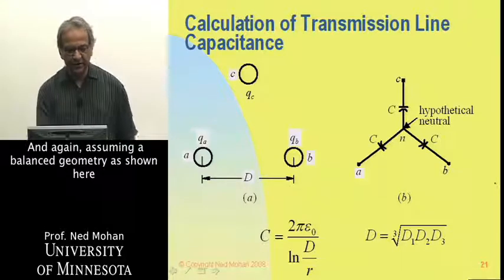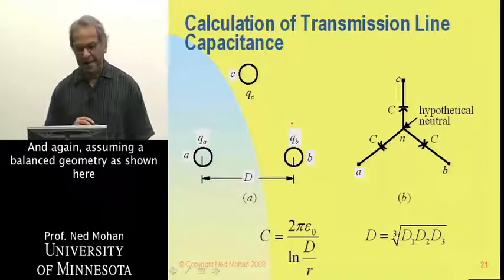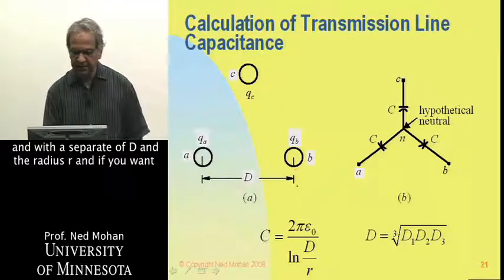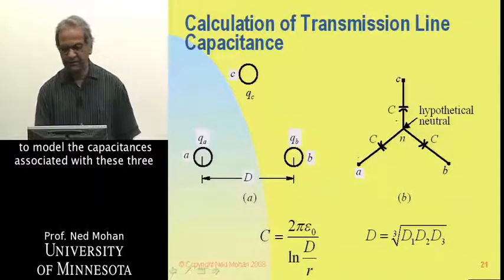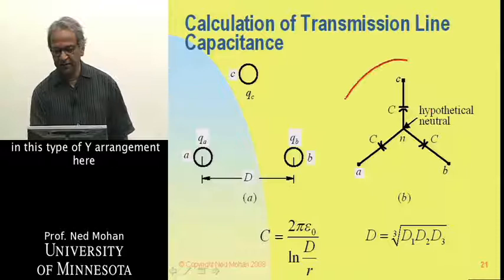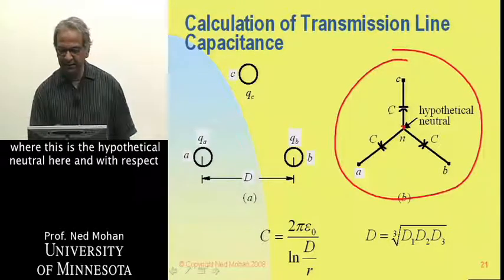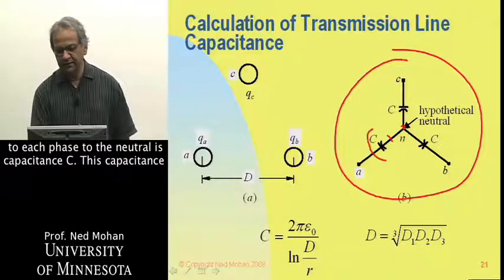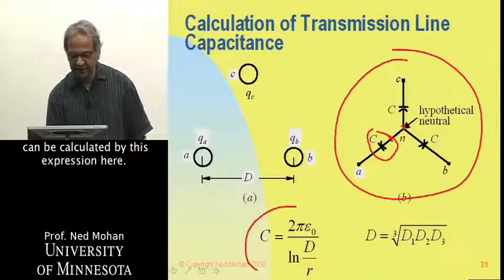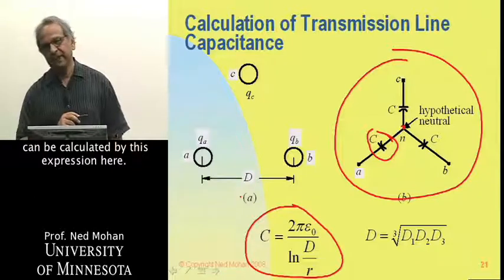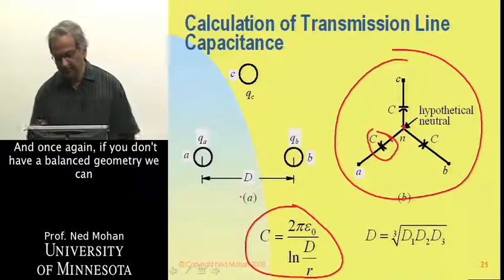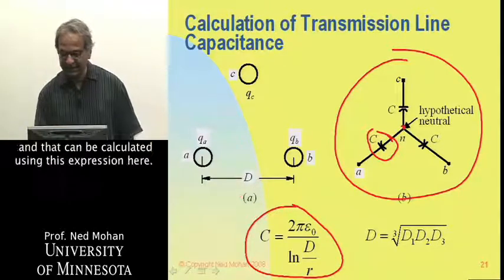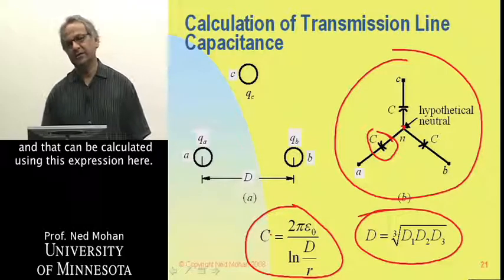Again, assuming a balanced geometry as shown here, with a separation of D and the radius R, and if you want to model the capacitances associated with these three in this type of Y arrangement here, where this is a hypothetical neutral, and with respect to each phase to the neutral there's a capacitance C. This capacitance can be calculated by this expression here. And once again, if we don't have a balanced geometry, we can calculate the geometric mean distance, and that can be calculated using this expression here.